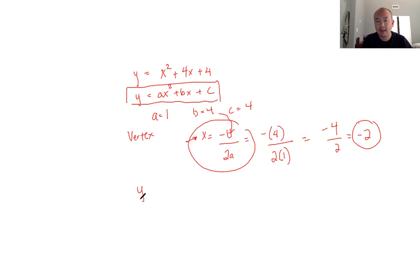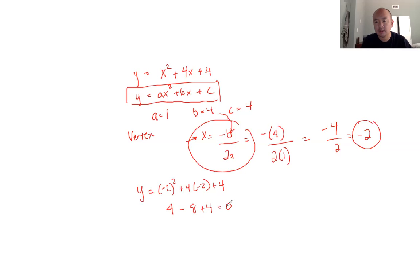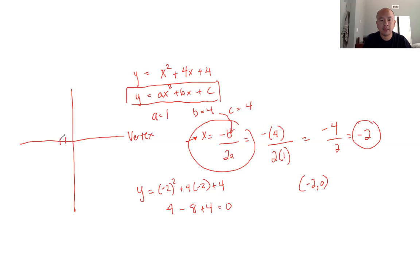Once you get that, you need to find the y value of the vertex, because you already have the x. So you plug negative 2 into this equation to find y. So we have y equals negative 2 squared plus 4 times negative 2 plus 4. This is 4 minus 8 plus 4 — because 4 times negative 2 is negative 8. So 4 minus 8 is negative 4, plus 4 equals 0. So in this case, the vertex is negative 2, 0.